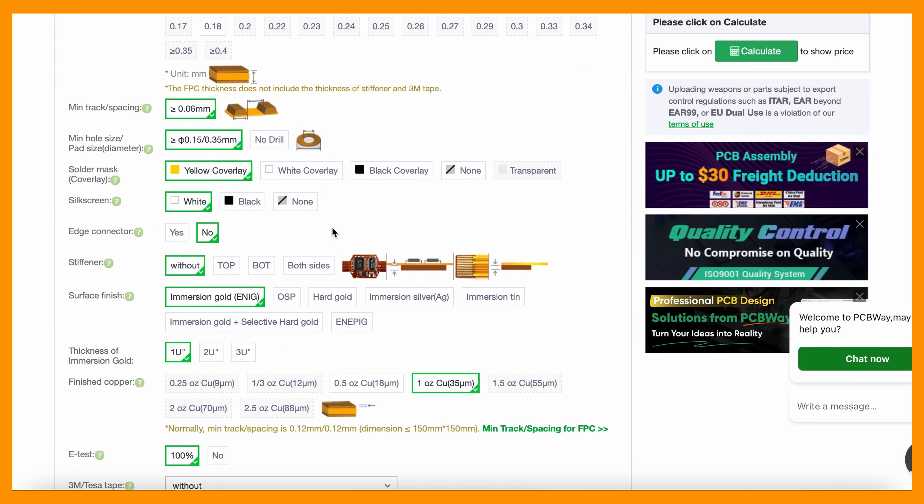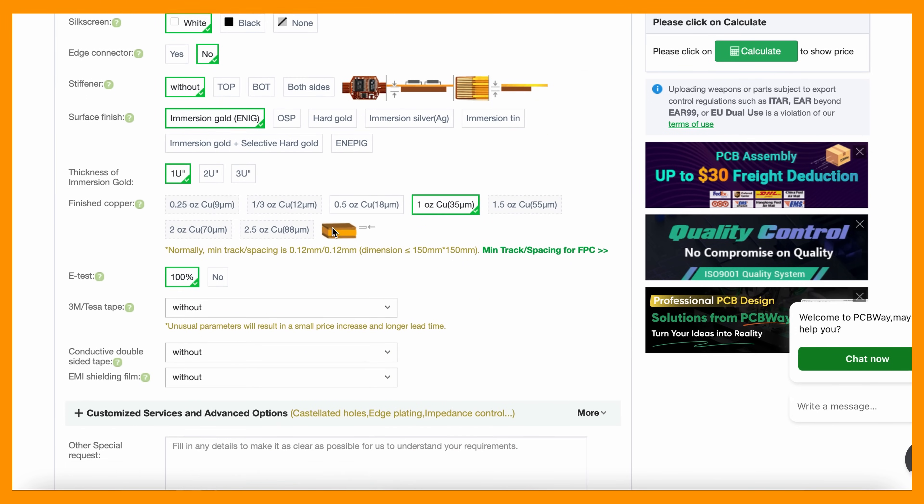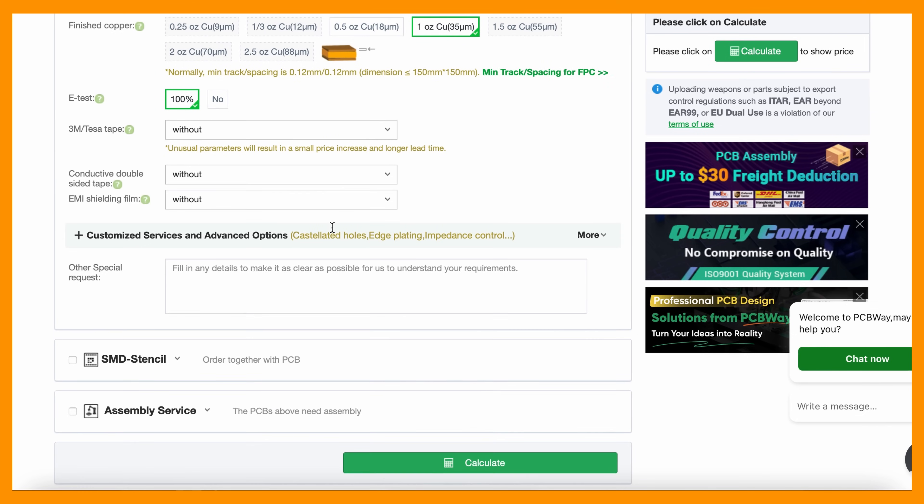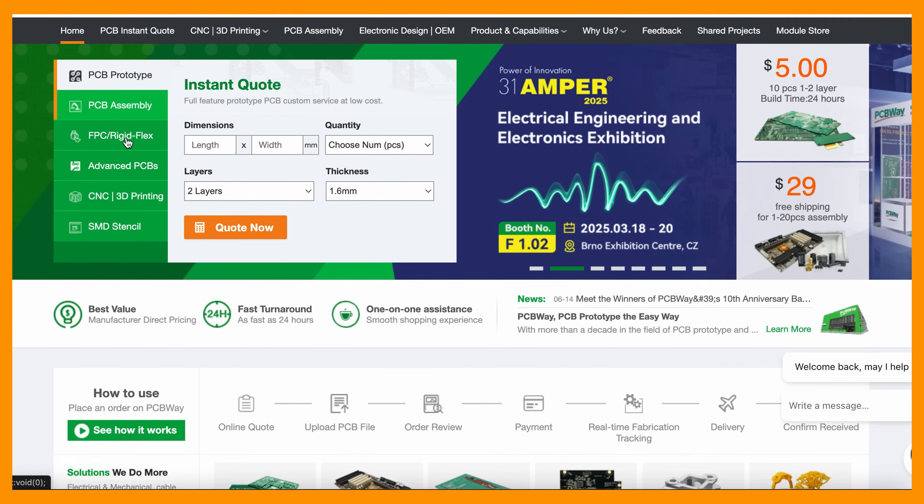For example board type, layers, solder mask or even surface finish. If you're in market for flexible PCB definitely check them out.